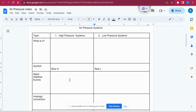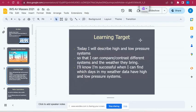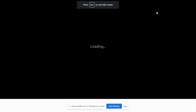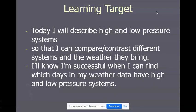So our learning target for today is: today I will describe high and low pressure systems so I can compare and contrast different systems and the weather they bring. I know I'm successful when I can find which days in my weather data have high and low pressure systems. This last piece, ladies and gentlemen, you have both a writing as well as multiple questions on your final test and quizzes related to this piece.